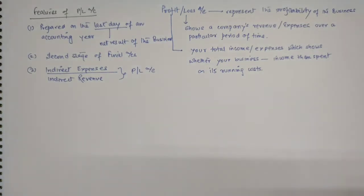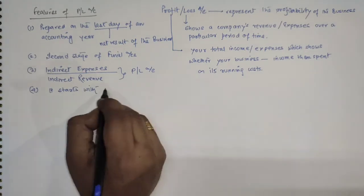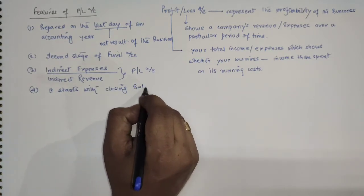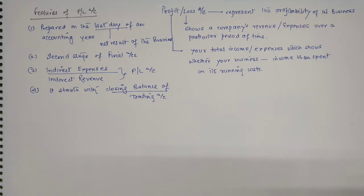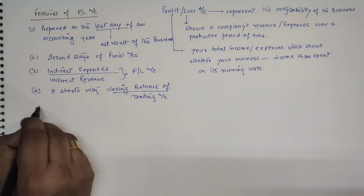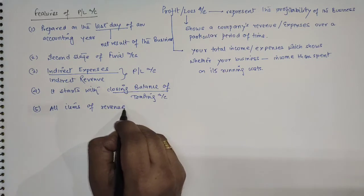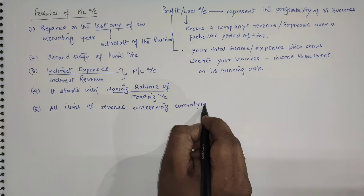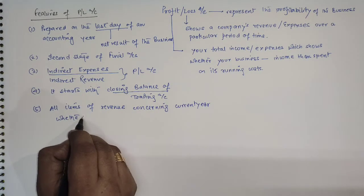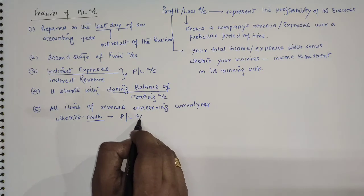Third, indirect expenses and indirect revenue are shown in this profit and loss account. Next, it starts with the closing balance of the trading account — the net profit or gross loss transferred from the trading account. Then all items of revenue concerning the current year, whether cash received or not, are taken into this account.